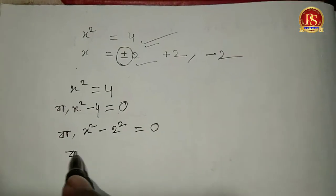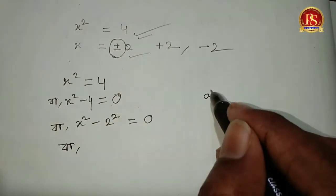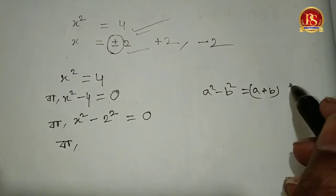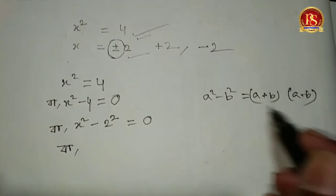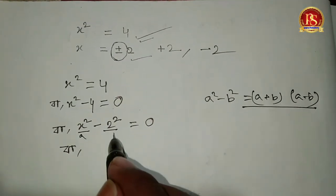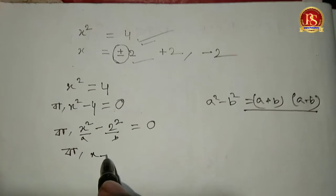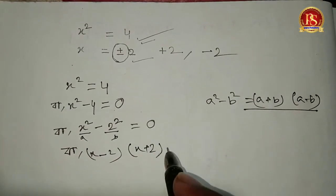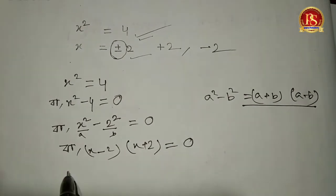Using the formula a² - b² = (a+b)(a-b), we can write x² - 2² = (x+2)(x-2) = 0. So either x - 2 = 0 or x + 2 = 0.